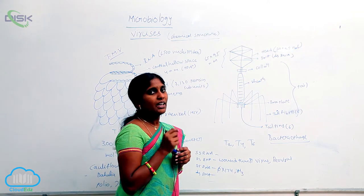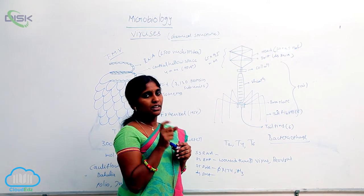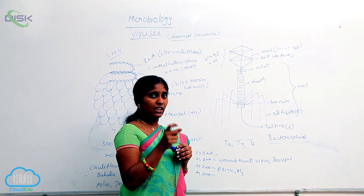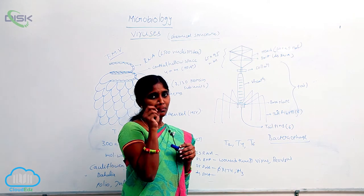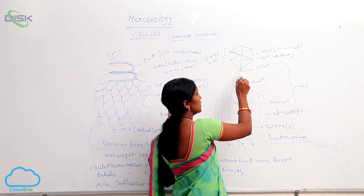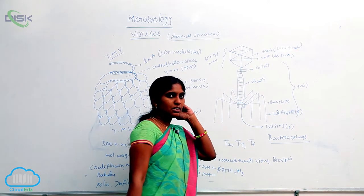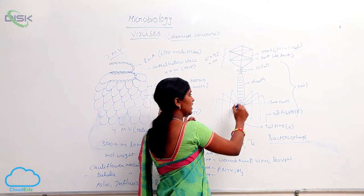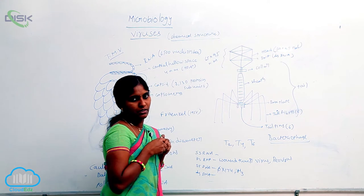And here, it connected with the tail. The head is connected to tail with the help of collar. Some neck like structure that is called collar. So, here the long sheath is present. At the end of the long sheath, here the tail is present.